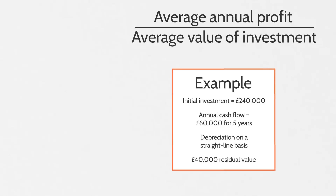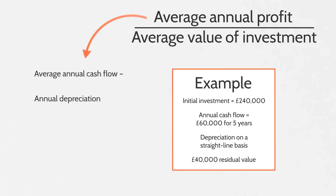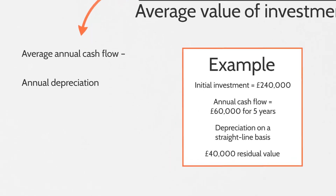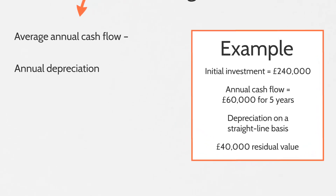We'll start by calculating the average annual profit. The average annual profit is calculated by taking the average annual cash flow and deducting the annual depreciation. We have the average annual cash flow in the example — it's £60,000 per year. For the annual depreciation, we haven't been given the actual annual figure, but we have been told the initial investment and how much will be left over as a residual value.